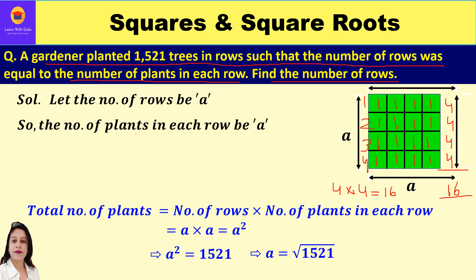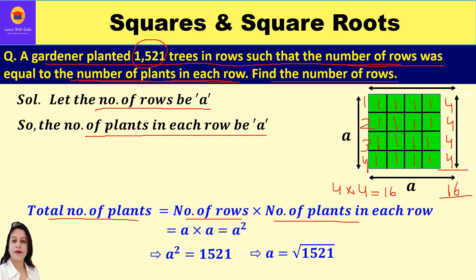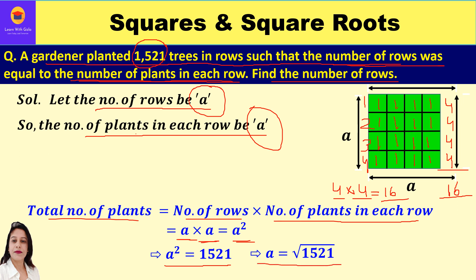The same concept is used in this question. Total number of plants are 1521, planted such that number of rows equals the number of plants in each row. Let the number of rows be 'a' and the number of plants in each row also be 'a'. Total plants = a × a = a². So a² = 1521, meaning a = √1521.